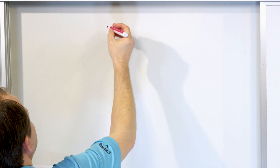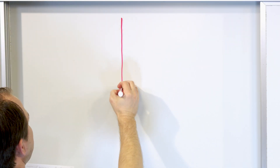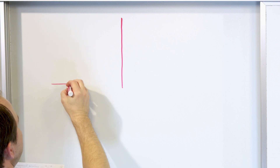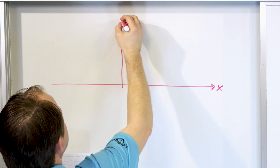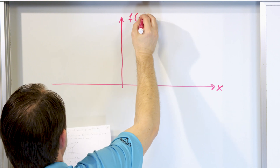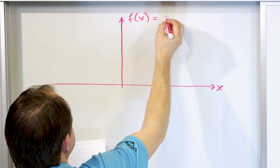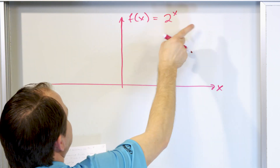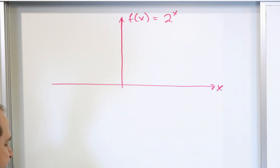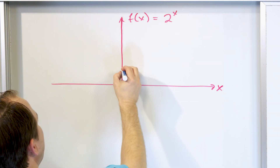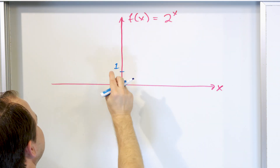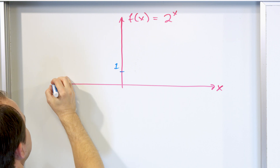The exponential function passes both the horizontal line test and the vertical line test. It is a one-to-one function. Whether it's two to the power of x or any base in general, exponential functions always cross the y-axis at one and go up from there.